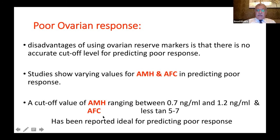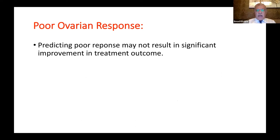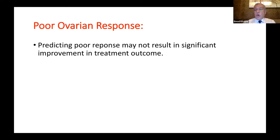Combining AMH and AFC together may provide ideal predictors of poor ovarian response. However, an important point is that predicting poor ovarian response may not result in significant improvement in treatment outcome. In many cases, whatever you do, the end result remains poor. This prediction is very important for counseling the patient about poor response and high cost, but in many cases you cannot improve the outcome.